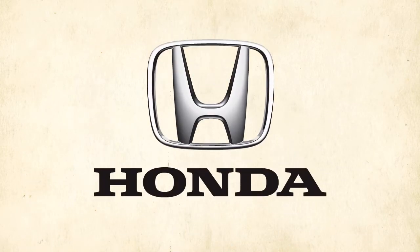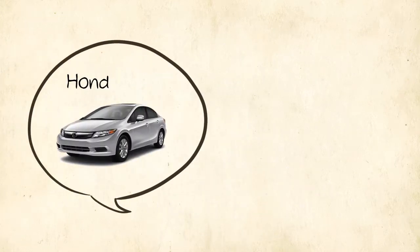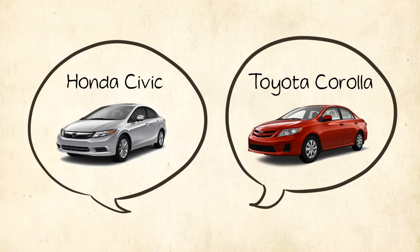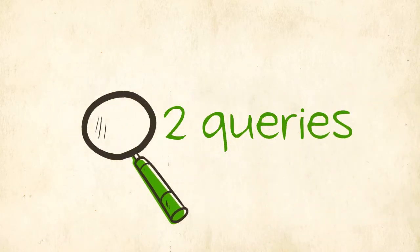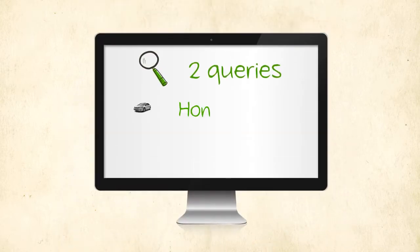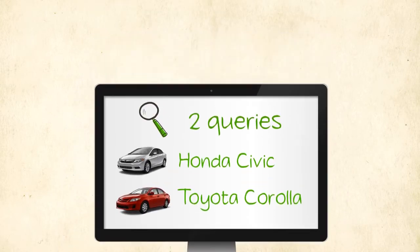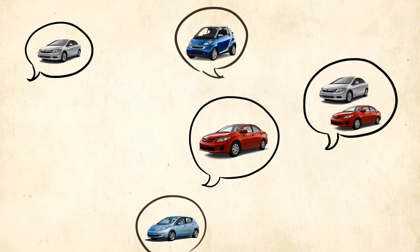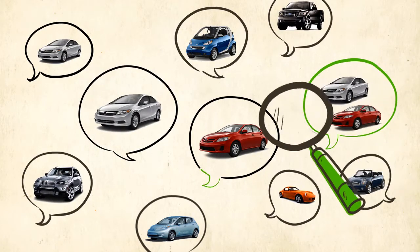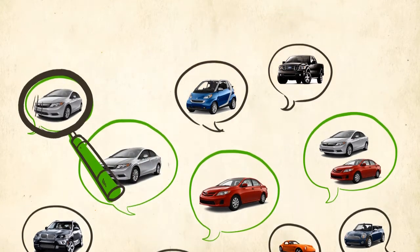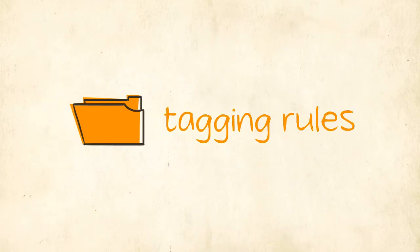Say you work for Honda and you want to find conversations about the 2012 Honda Civic and one of its competitors, the Toyota Corolla. You will need to tell Heartbeat to find any conversations that include these two queries, Honda Civic and Toyota Corolla. You're most likely interested in finding conversations that are more specific, as opposed to every single mention of Honda Civic and Toyota Corolla. This is where tags come into the picture.